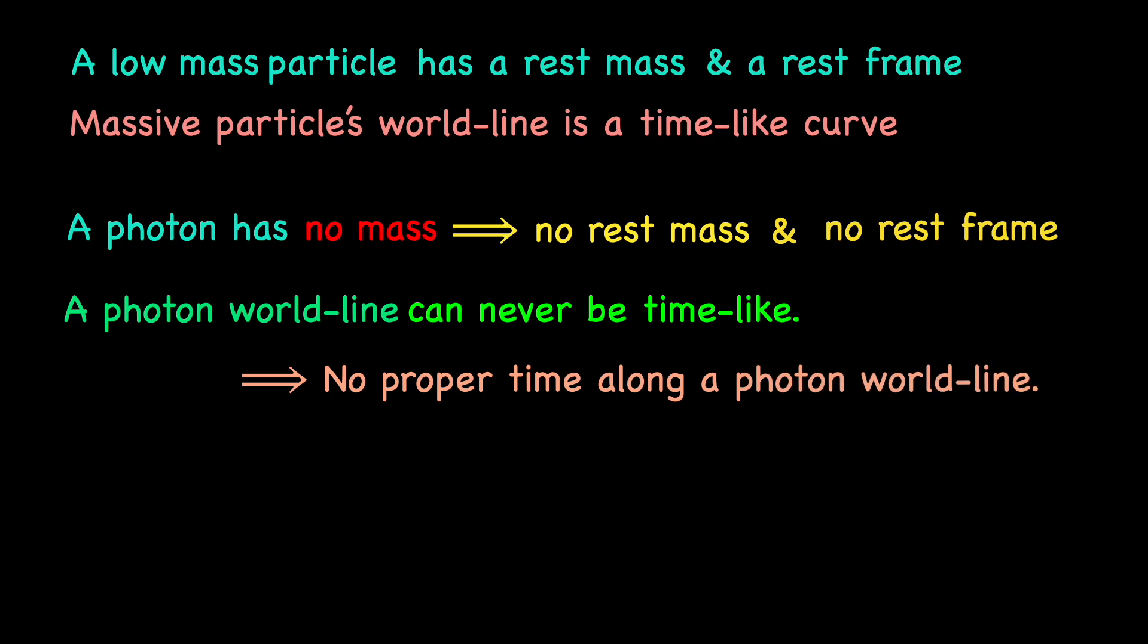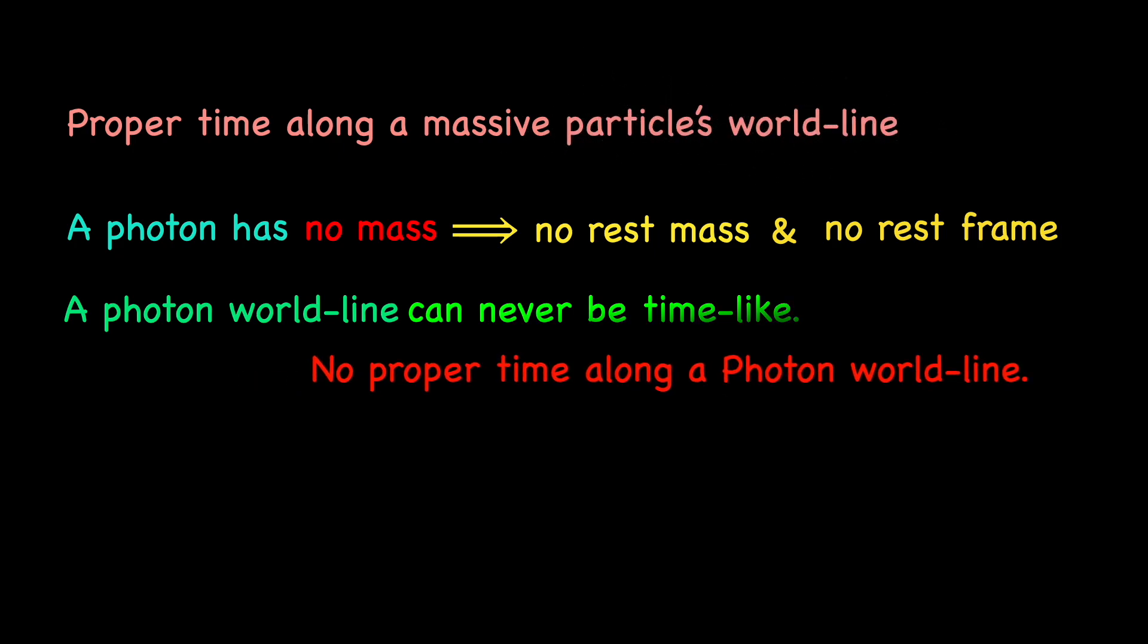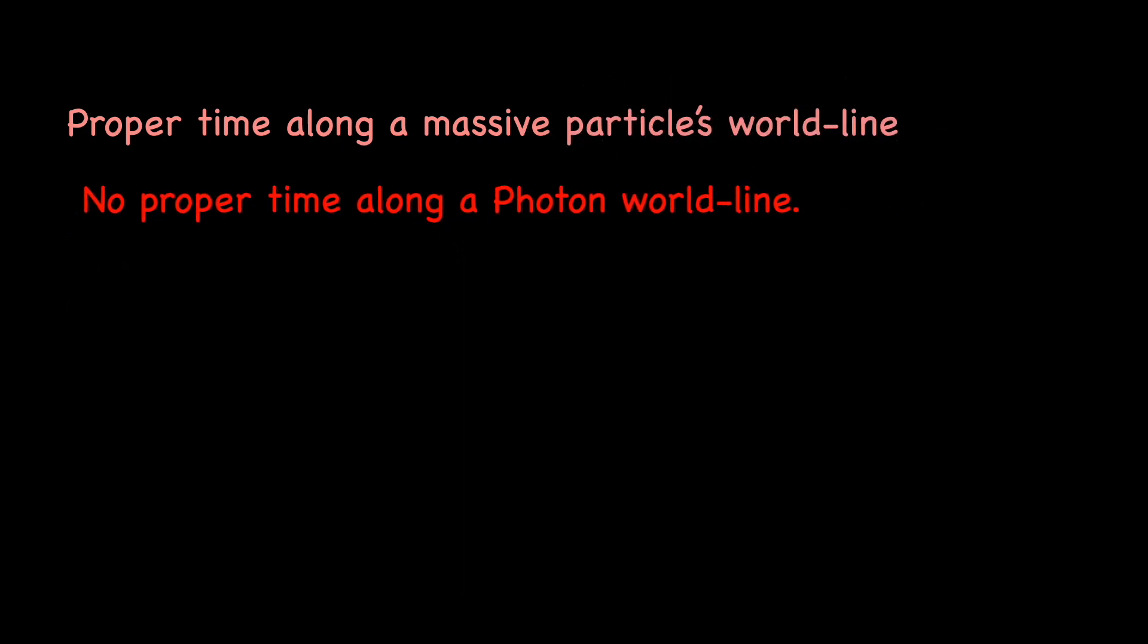In summary, a massive particle of however low mass has a proper time along its world line, but a photon being massless cannot have one.